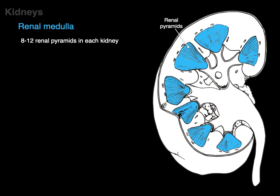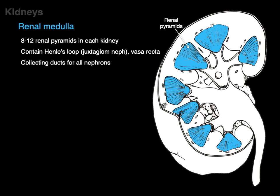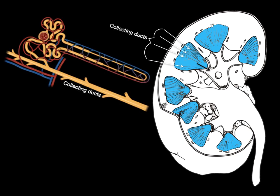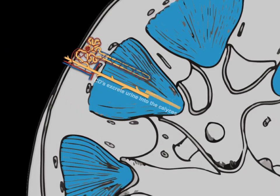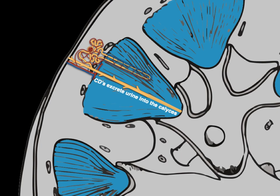There are 8 to 12 renal pyramids in each kidney. They contain the loops of Henle for juxtamedullary nephrons, as well as vasa recta and the collecting ducts for all nephrons. The black stripes visible in a renal pyramid are collecting ducts excreting urine out into the minor calyx. Superimposing the nephron on the kidney, you can see those collecting ducts excreting urine into the calyces.